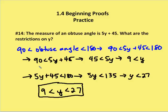So on the left-hand side of the equation, I have 90 is less than 5y plus 45. I subtract 45 from both sides. I'm left with 45 is less than 5y. And I know that y is greater than 9.